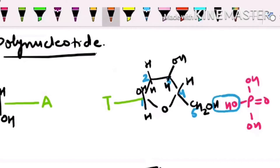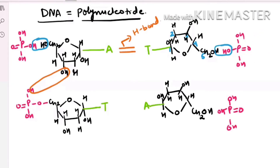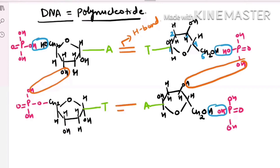This nucleotide and these two nucleotides follow the complementary base pairing rule — adenine will pair with thymine with the help of two hydrogen bonds. With the next nucleotide, again two hydrogen bonds are made between adenine and thymine.